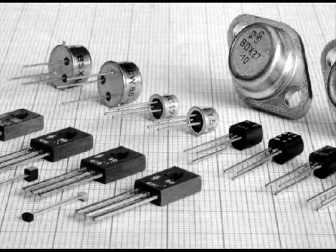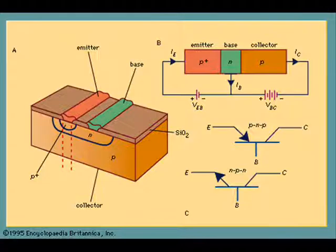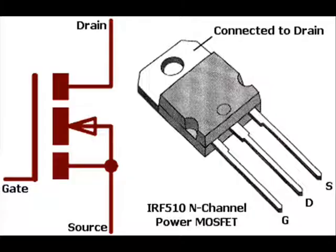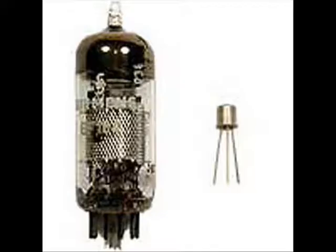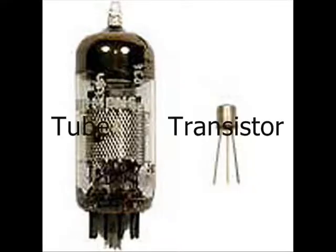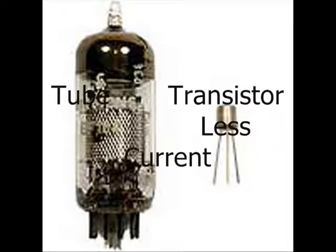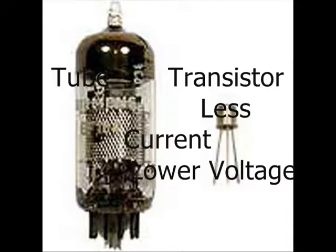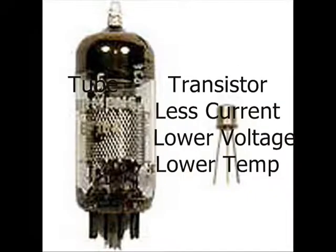As years passed, transistors got smaller and smaller, with new developments such as the bipolar transistor and the MOSFET transistor, along with other important advancements. People began to realize the benefits of transistors over vacuum tubes, as transistors used less current, ran at lower voltages, and ran a lot cooler.